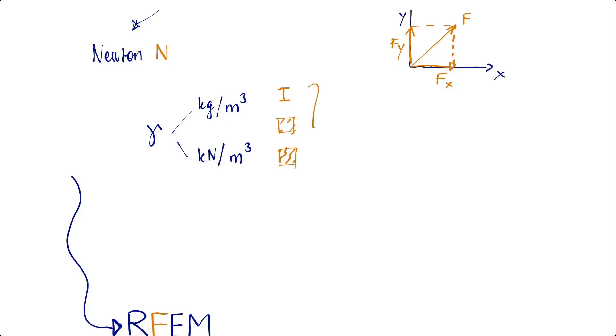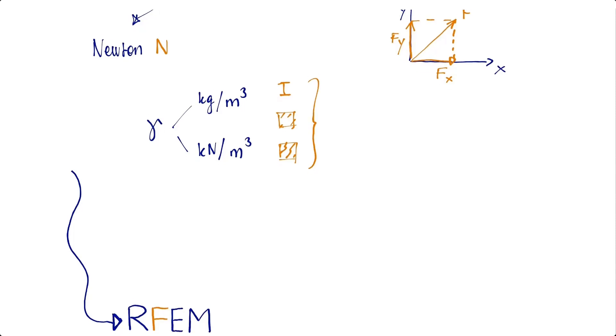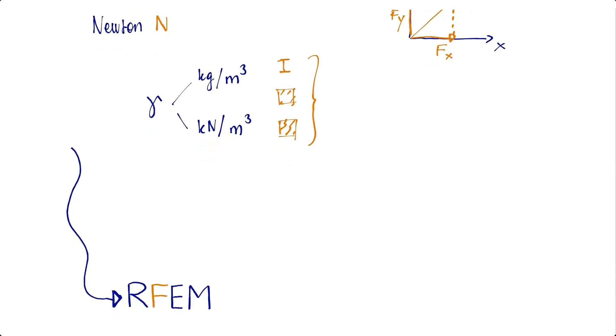The unit of the weight density is kilogram per cubic meter or kilonewton per cubic meter. The weight densities of various building materials are listed in the standards for structural engineers.